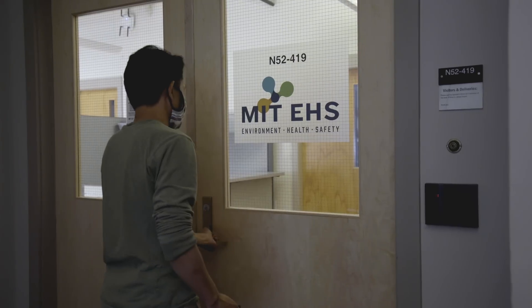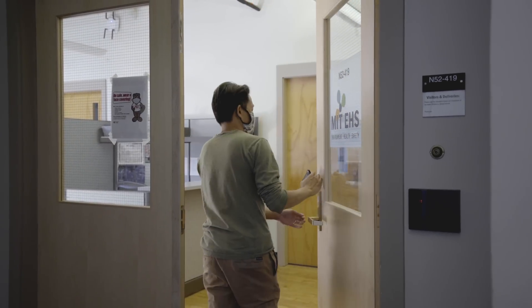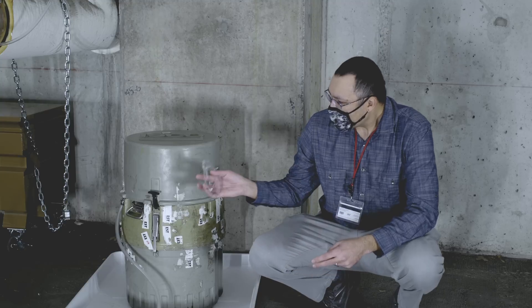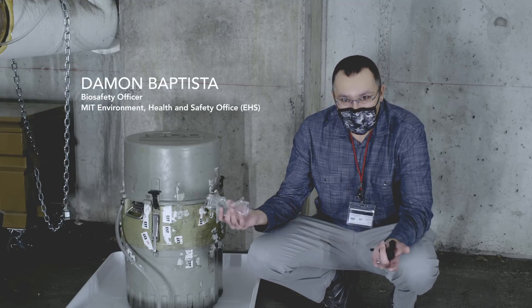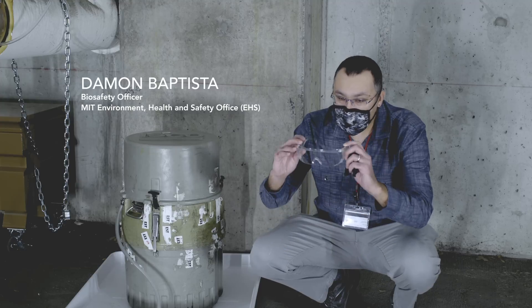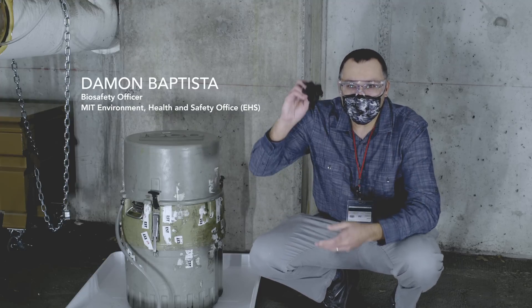MIT's Environmental Health and Safety Office is an integrated office of safety professionals from a wide variety of disciplines. We look at certain things for this project. One of the things is what kind of personal protective equipment people will wear. Some examples are safety glasses and gloves.